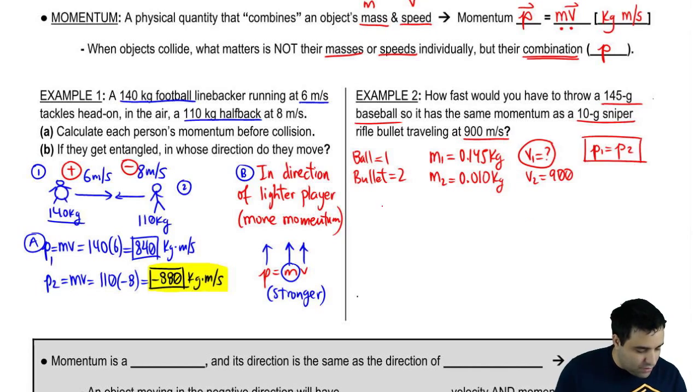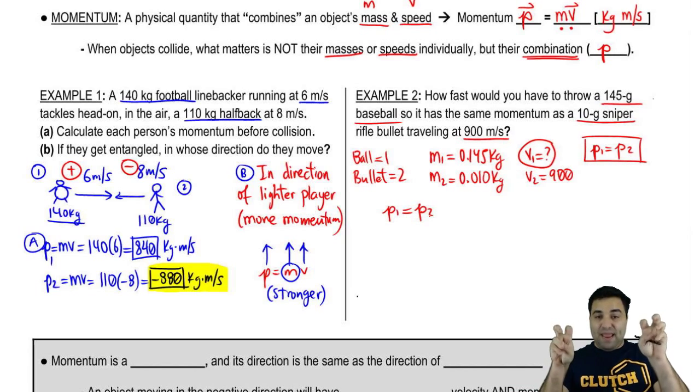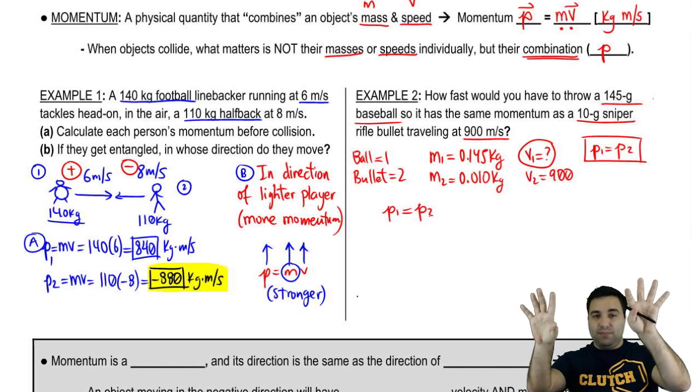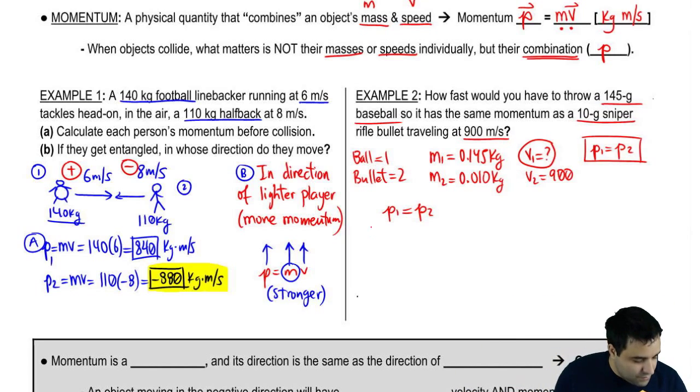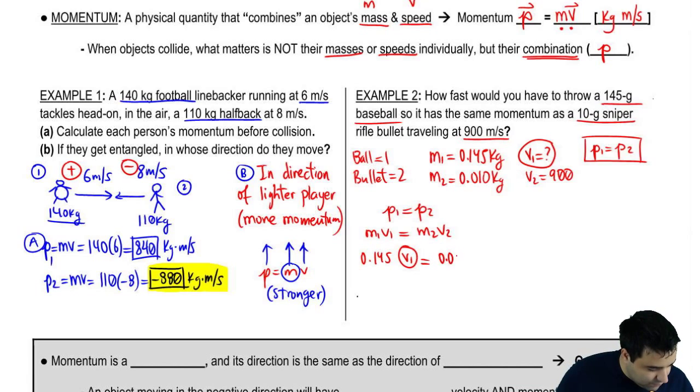P1 equals P2. And I'm going to expand both sides. In other words, I'm going to replace the P's with MV's. So it's going to be M1 V1, M2 V2. And if you look carefully, you see that you have all the numbers except for your unknown. So mass one is 0.145 V1. Mass two is 0.010. And the velocity is 900. And you now have to just toss this over here, divide by 0.145.